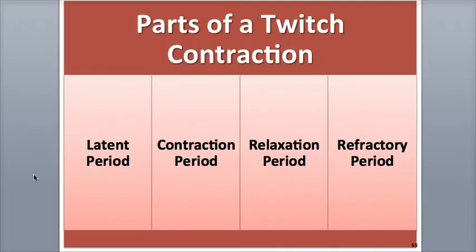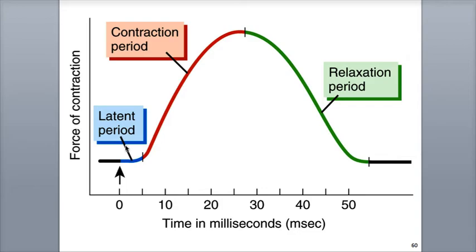The different parts of a twitch contraction are the latent period, the contraction period, the relaxation period, and the refractory period. The latent period is a brief delay period, lasting about 2 milliseconds, that happens after the stimulus is applied, shown by the arrow at time 0 on the graph, and before the start of the actual contraction.